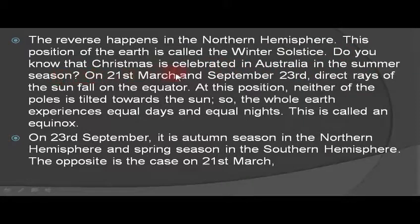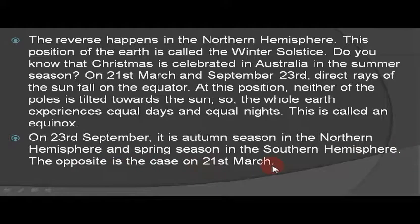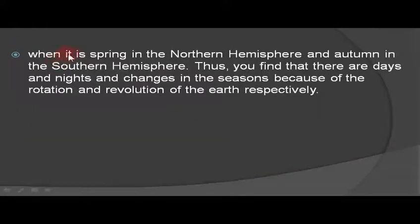Do you know that Christmas is celebrated in Australia in the summer season? On 21st March and 23rd September, direct rays of the sun fall on the equator. At this position, neither of the poles is tilted towards the sun, so the whole earth experiences equal days and equal nights — this is called an equinox. On 23rd September it is autumn in the Northern Hemisphere and spring in the Southern Hemisphere, and the opposite is the case on 21st March.